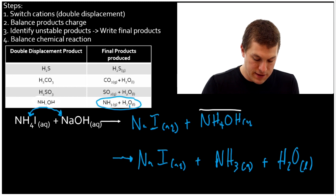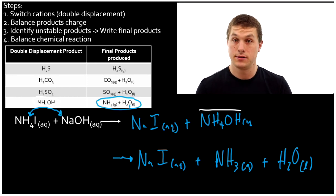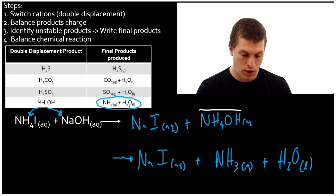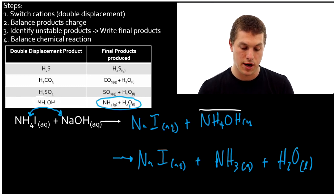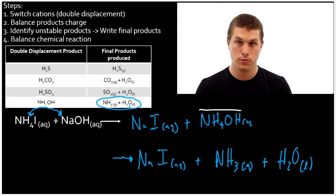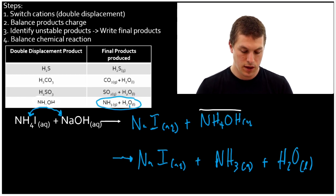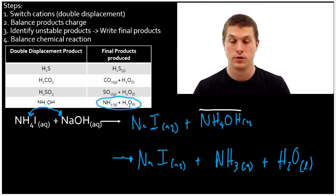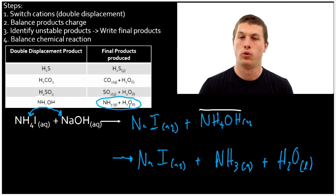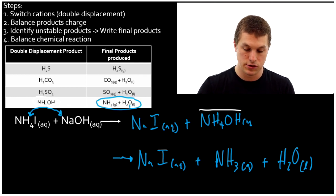And this reaction is also balanced. The charges are balanced. So really, we switched the cations and we identified the unstable products. Balancing of the product's charge, it was good. Ammonium was plus one. Hydroxide was minus one. Sodium was plus one. Iodine was minus one. And the chemical reaction is also already balanced. And that's not totally uncommon with these reactions. Let's do one more example where you actually need to pay more attention to these two steps.